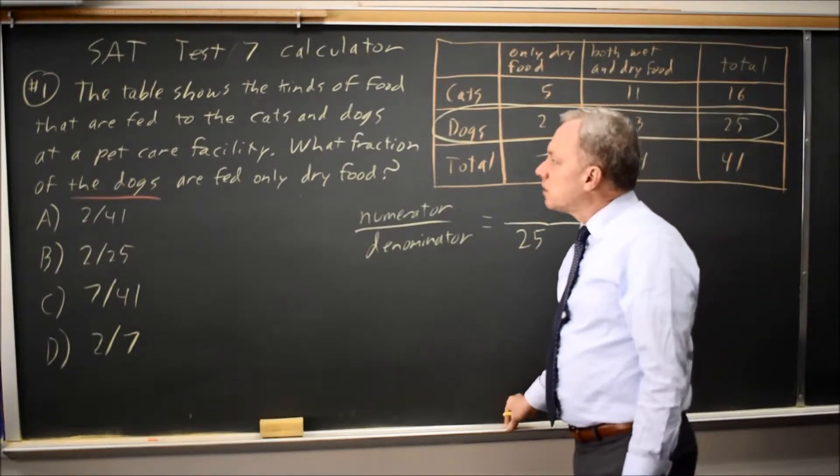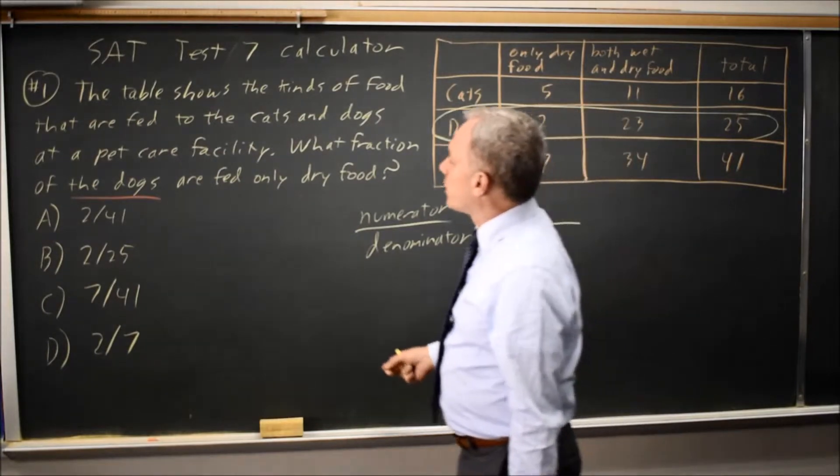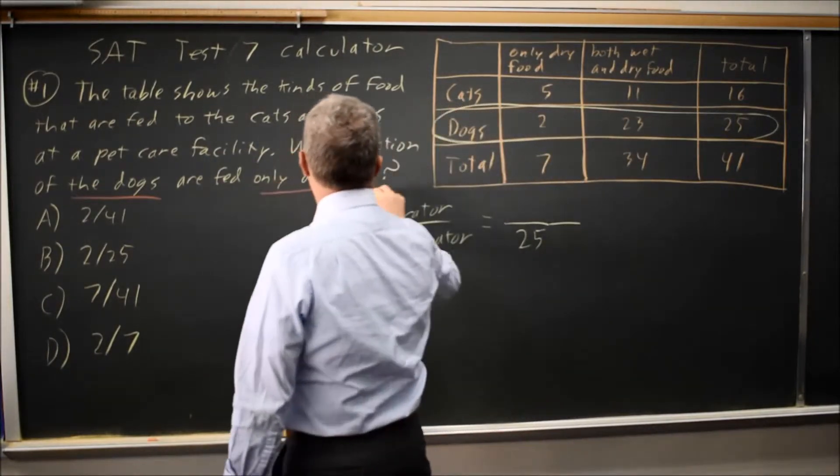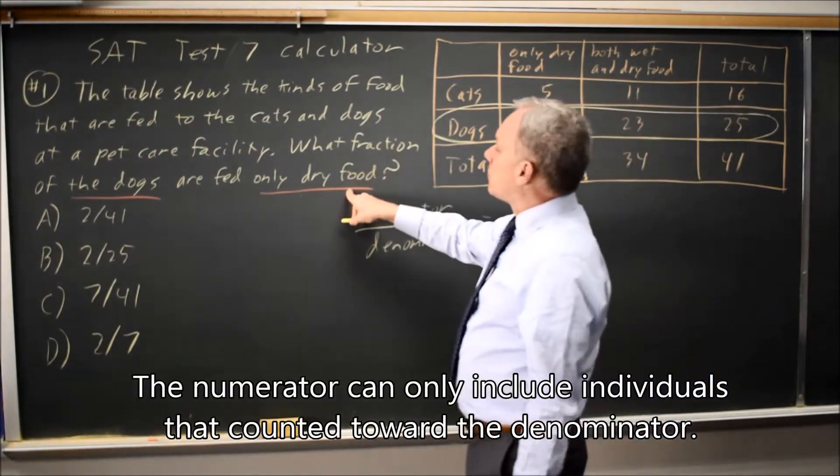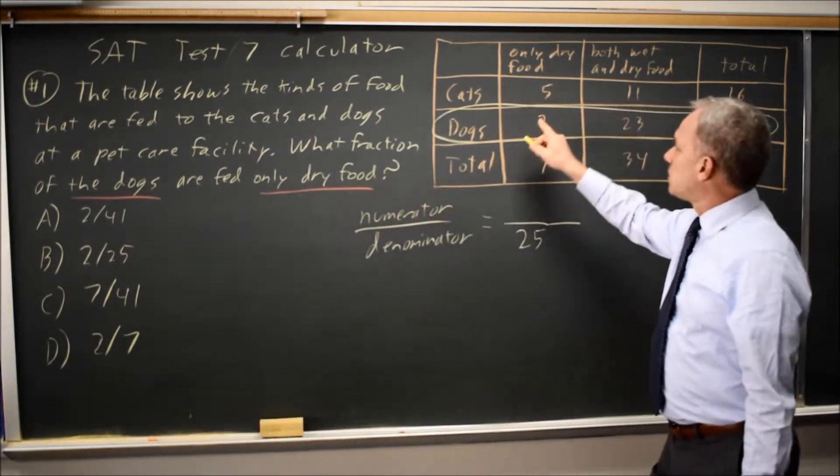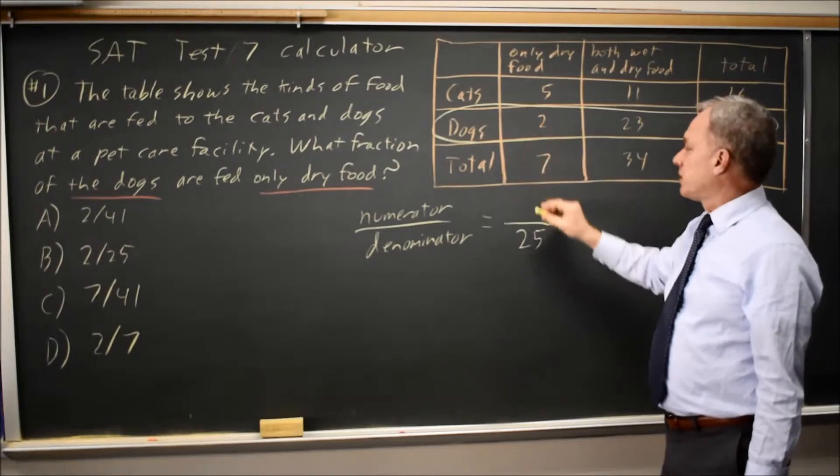The second part of that is, what fraction of the dogs are fed only dry food? So among the dogs, our numerator will be how many dogs only receive dry food, and that's 2.